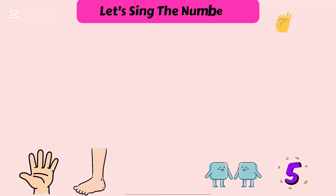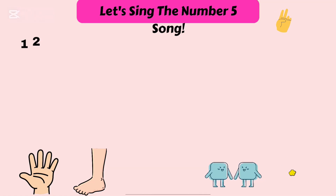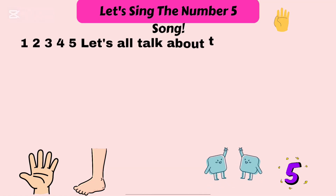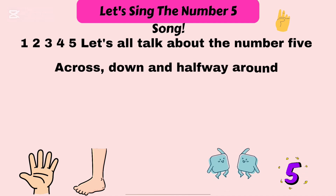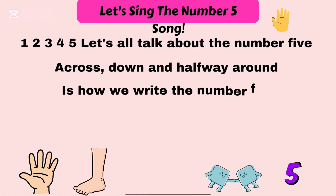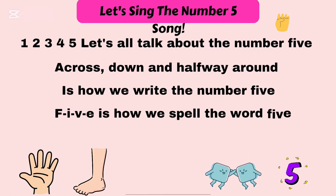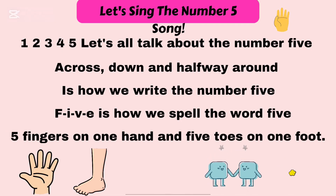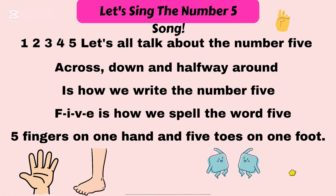Before we go, let's learn a song about the number five. One, two, three, four, five. Let's all talk about the number five. Across, down, and halfway around is how we write the number five. F-I-V-E, five is how we spell the word five. Five fingers on one hand and five toes on one foot.